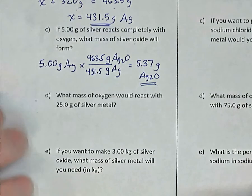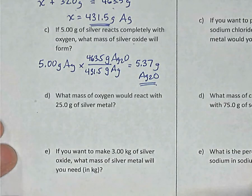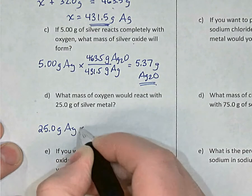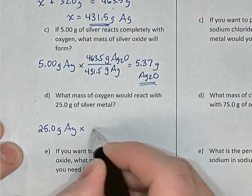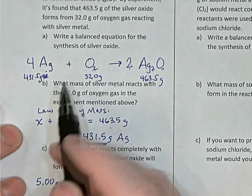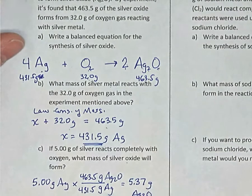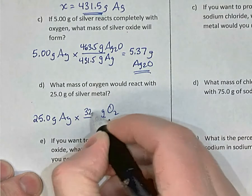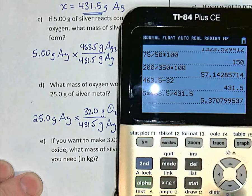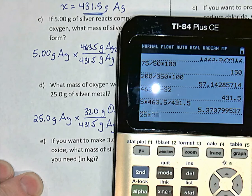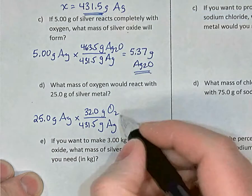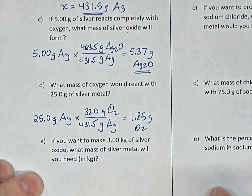Part D: what mass of oxygen would react with 25 grams of silver? Setting up the unit multiplier: 25.0 grams of silver, converting to grams of oxygen. Using the recipe, 431.5 grams of silver reacts with 32 grams of oxygen. So 25 × 32 ÷ 431.5, keeping three significant digits, gives 1.85 grams of oxygen.